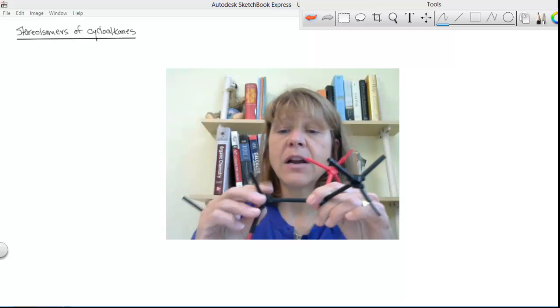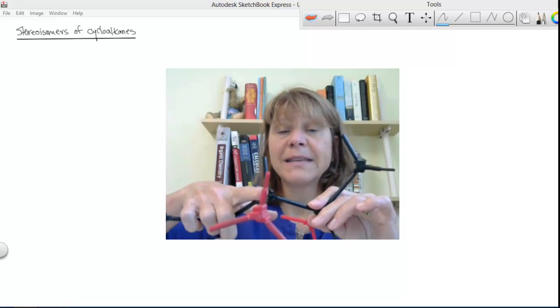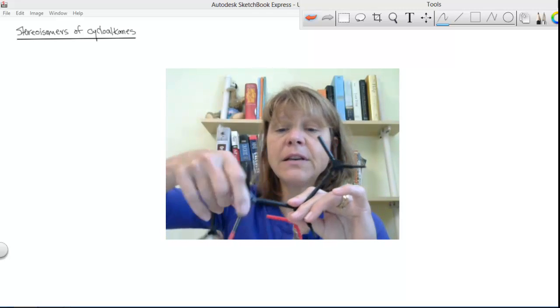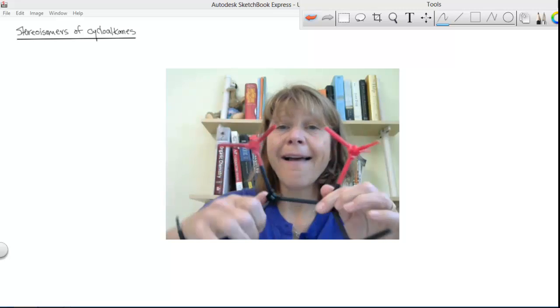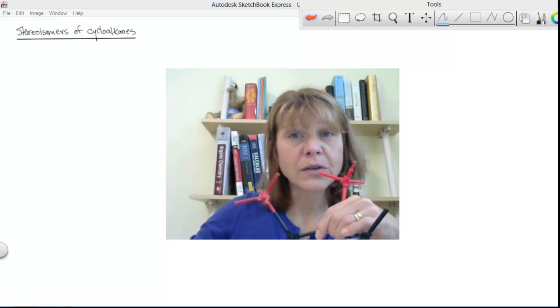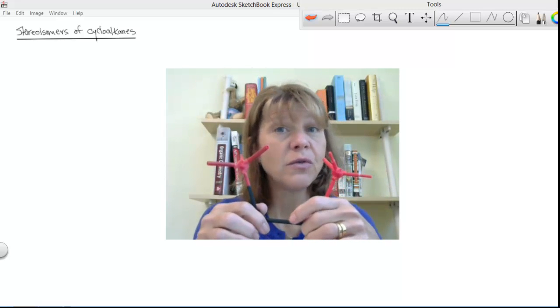Whereas if I start out with a straight chain, this methyl group is coming out and this methyl group is going back, all I have to do is rotate and voila, same side. So that's why ring structures have stereoisomers and straight chain structures do not.